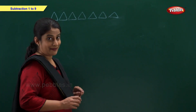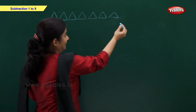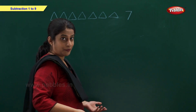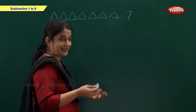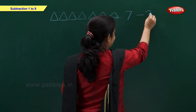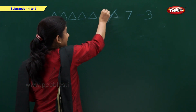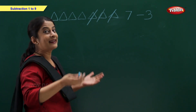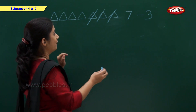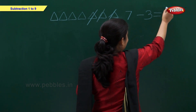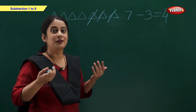I have 7 triangles: 1, 2, 3, 4, 5, 6, 7. I want to remove 3 triangles. So minus 3. Let's remove 3 triangles now: 1, 2 and 3. Now how many triangles left with me? Let's count: 1, 2, 3, 4. So friends, 7 minus 3 is 4.